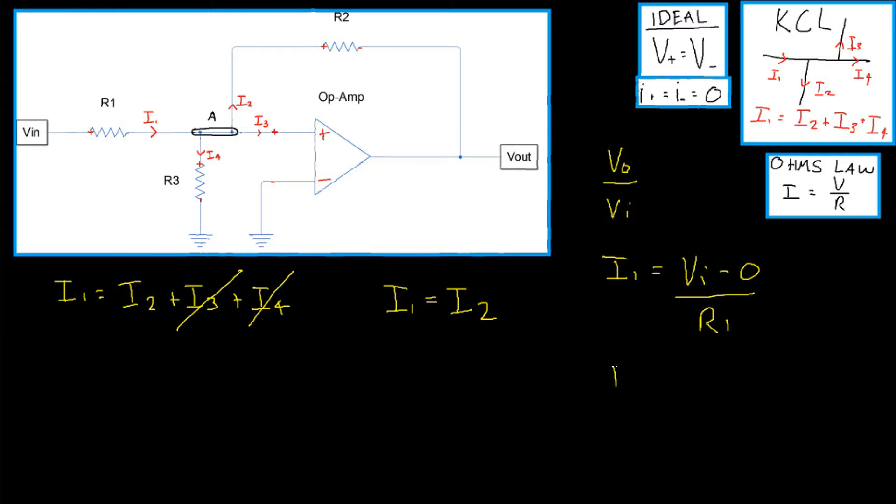We can do the same for I2. As the current starts at node A, we have 0 volts subtract the voltage at Vout divided by the resistance it traveled through, R2. Okay, so we now have two equations for I1 and I2.